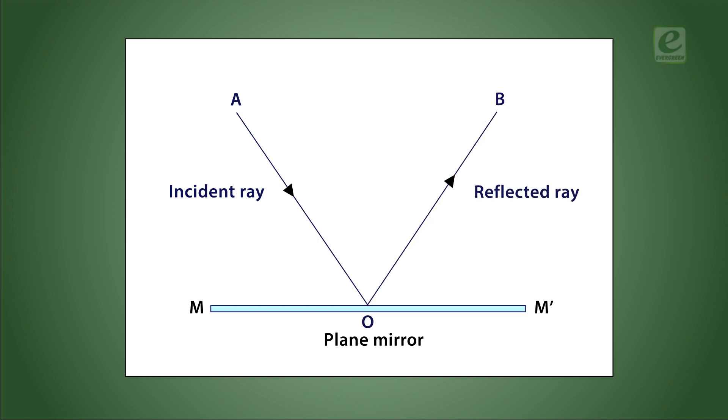If a perpendicular, say ON, is drawn to the reflecting surface at the point of incidence, then the ray perpendicular to the surface is called the normal ray. The angle it makes with the incident ray AO is called the angle of incidence, denoted by small i. While the angle between normal and reflected rays, angle BON, is called the angle of reflection, denoted by small r.